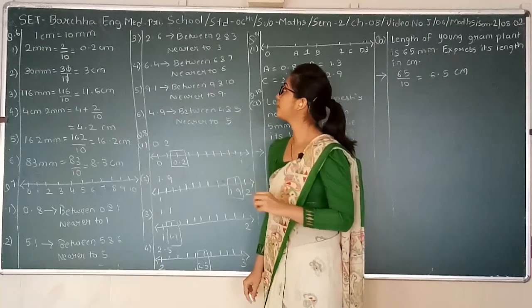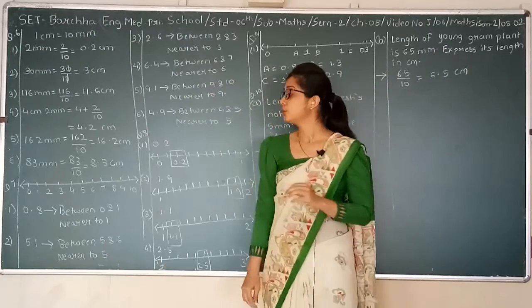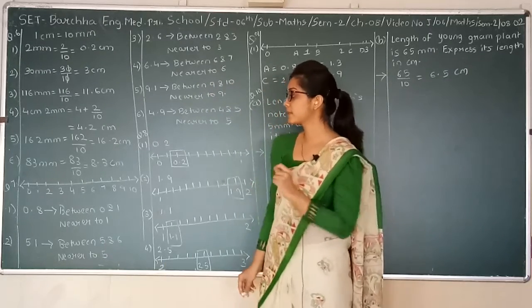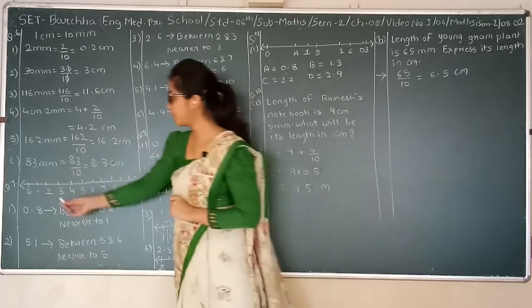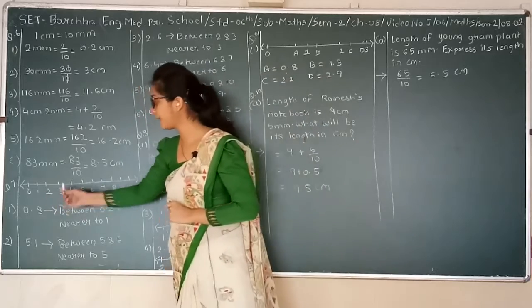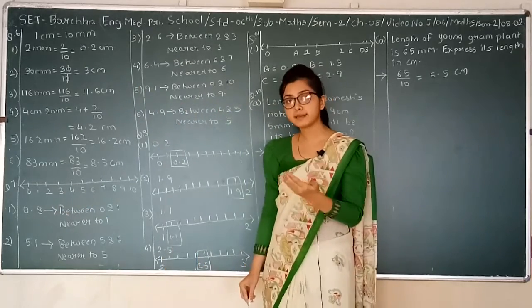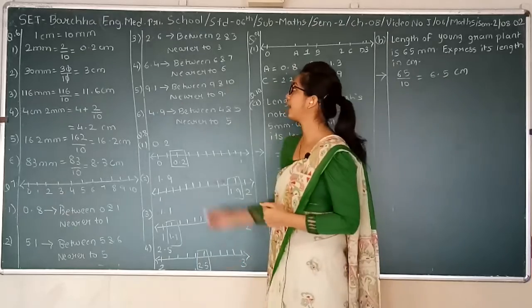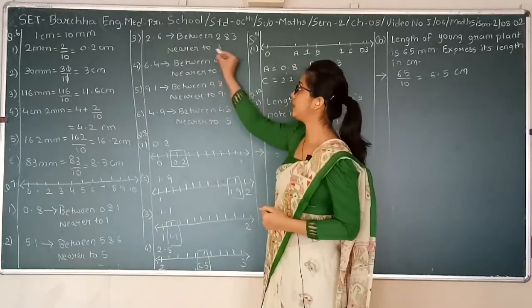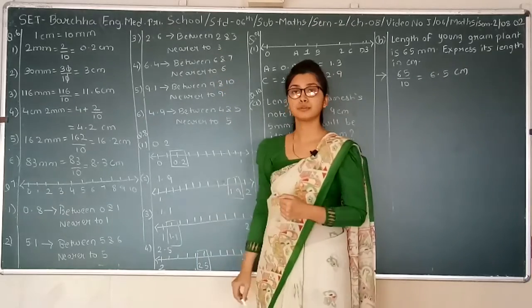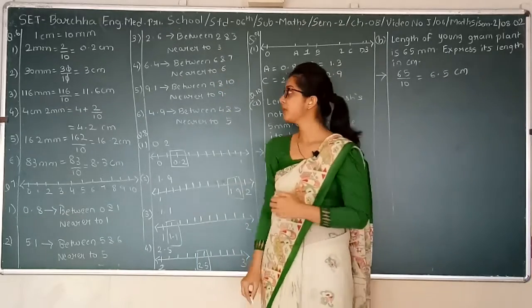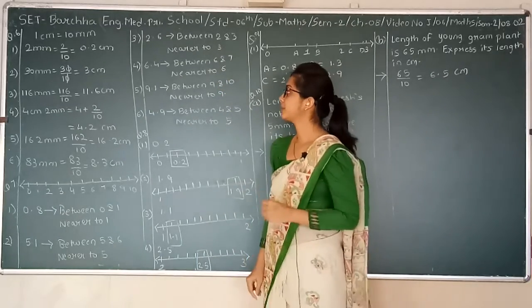Next one: 2.6. 2.6 will be in between 2 and 3. Since 0.6 is greater than 0.5, it will be nearer to 3.